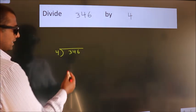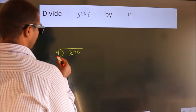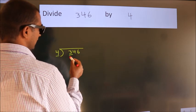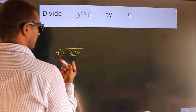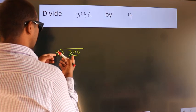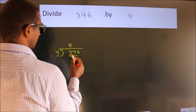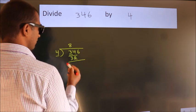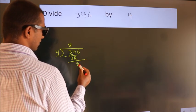Next. Here we have 3, here 4. 3 smaller than 4. So we should take 2 numbers, 34. A number close to 34 in 4 table is 4 times 8, 32. Now we should subtract. We get 2.